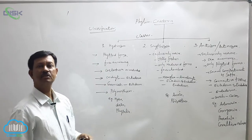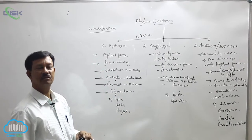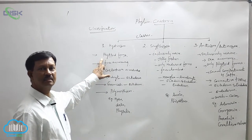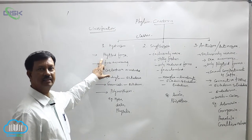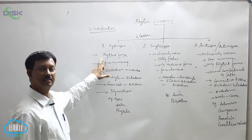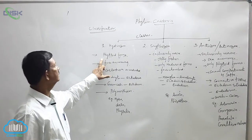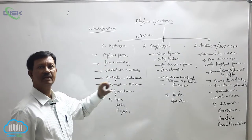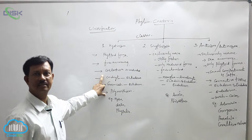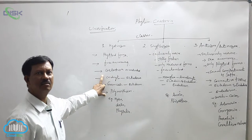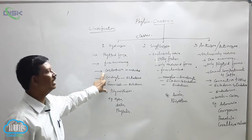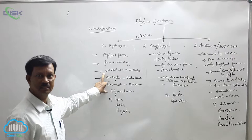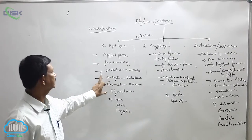Medusa is a free-swimming form, while polyp is sedentary, sessile, and cylindrical in shape. The inner cavity is known as the coelenteron, and the coelenteron is undivided — it is not divided into any chambers or compartments.